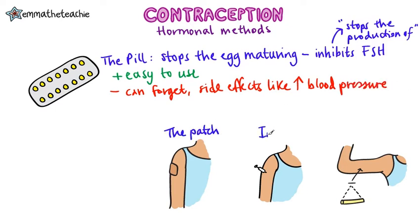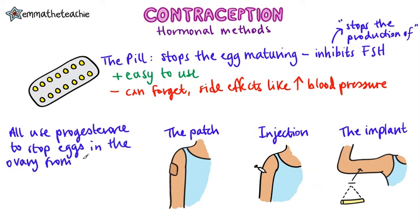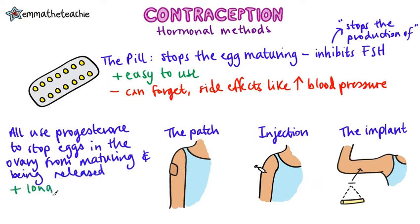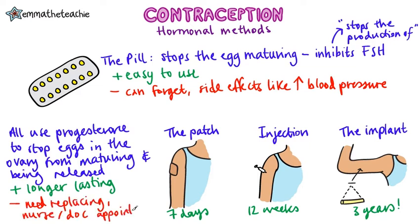The next methods are the patch, the injection, and the implant. All of these use the hormone progesterone, which inhibits eggs in the ovary from maturing or from getting released, and they last progressively longer — this is a big advantage. However, they all need replacing, and the injection and implant require a nurse or a doctor to administer.